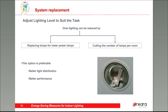Overlighting can be reduced by replacing lamps with lower power lamps, or cutting the number of lamps per room. The first option — reducing the power of lamps — is preferable, since it serves better for light distribution and luminaire performance. But the most common is the second option: cutting the number of lamps per room. This is not ideal — we can see a picture of a luminaire prepared for two lamps but with only one lamp. This is very common because with this option you don't need an investment and instantly you reduce consumption by 50%.